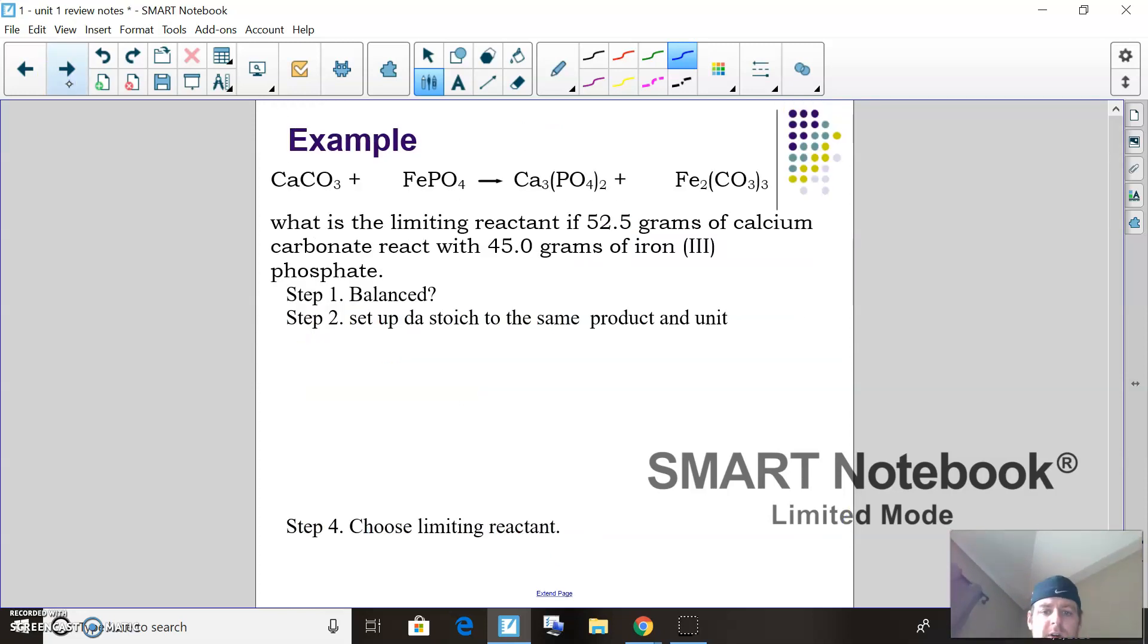So here is an example. Make sure it's balanced—three, three should be good, one, one. What you need to do is set up the stoichiometry to the same product. If it doesn't tell you which product to go to, just pick one. If I have 52.5 grams of calcium carbonate...